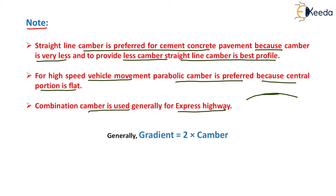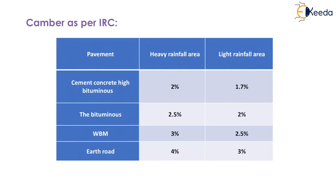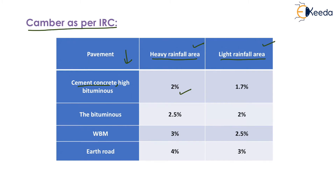The gradient equals two times the camber. As per Indian Road Congress, camber values are specified for heavy rainfall areas and light rainfall areas. For cement concrete or high bituminous pavement, the camber is 2% in heavy rainfall areas and 1.7% in light rainfall areas.